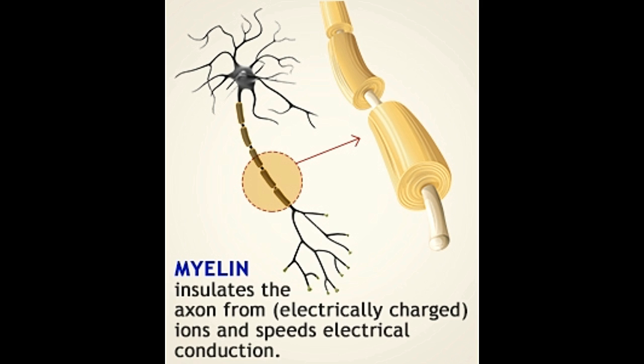A neuron is an electrically charged cell; it transmits messages to other neurons via electrical and chemical impulses. Its long axon extends in order to communicate with other neurons, carrying electrical impulses to the terminals and transmitting them to the dendrites of the next neuron via a chemical reaction. Myelin present on the axon functions as an insulating material and helps increase the speed of conduction.